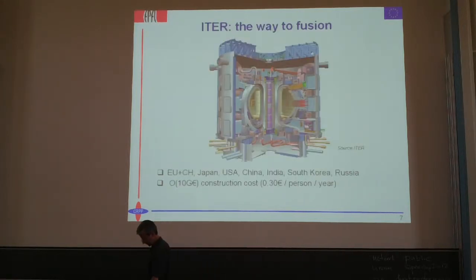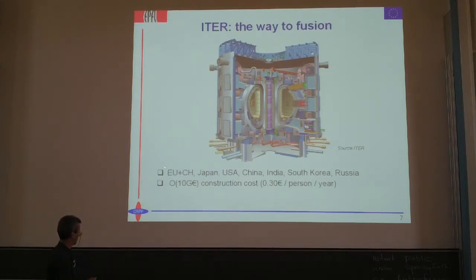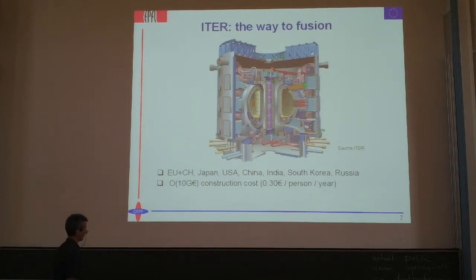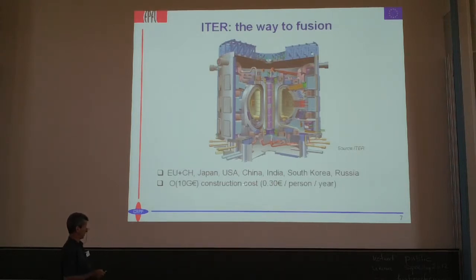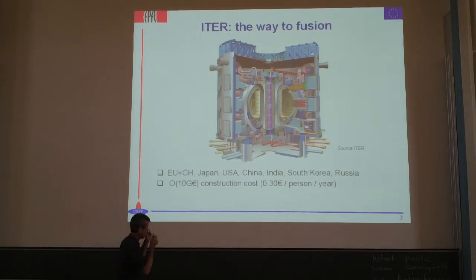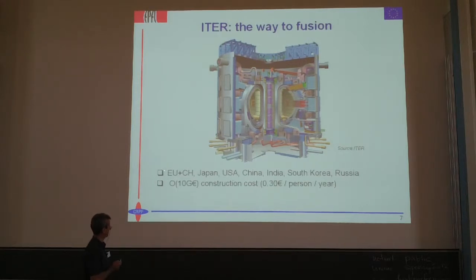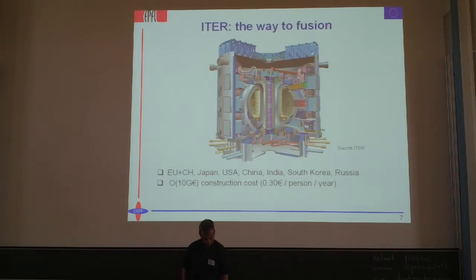ITER is a project where basically the whole world — EU plus Switzerland, Japan, US, China, India, South Korea, and Russia — have teamed up to build this device. The construction cost is of course large — on the order of magnitude of 10 billion euros — which means 30 centimes per person per year of those countries. So it's large or small depending on the point of view.